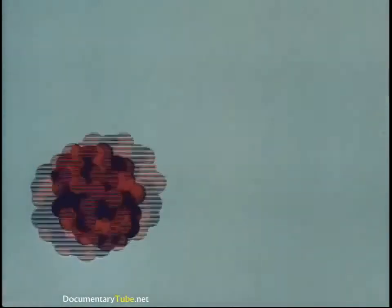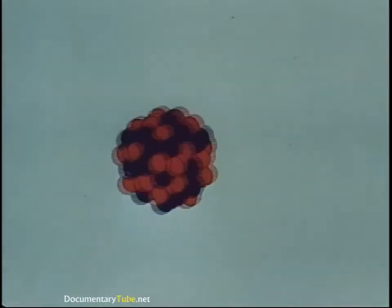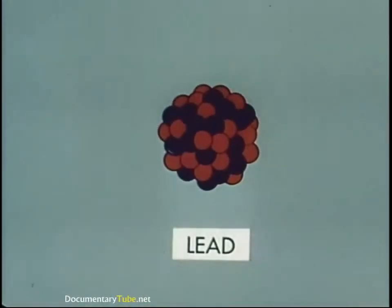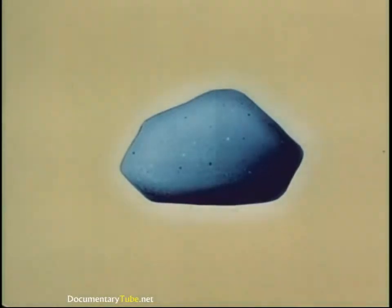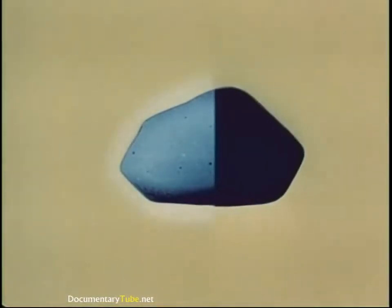Natural radioactivity causes these heavy, unstable elements to decay progressively down the ladder, eventually reaching a stable form of lead. The unit for measuring the rate of such changes or transmutations is the half-life — the time required for 50% of a radioactive material to decay.